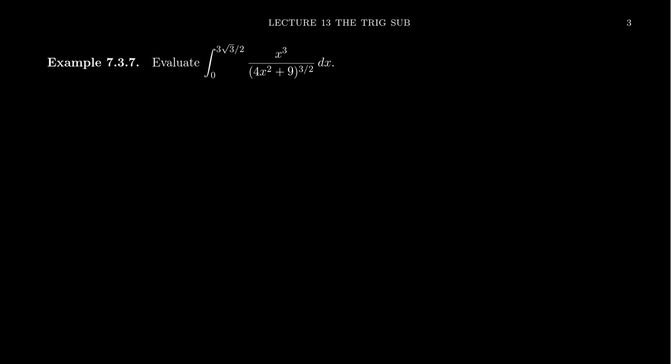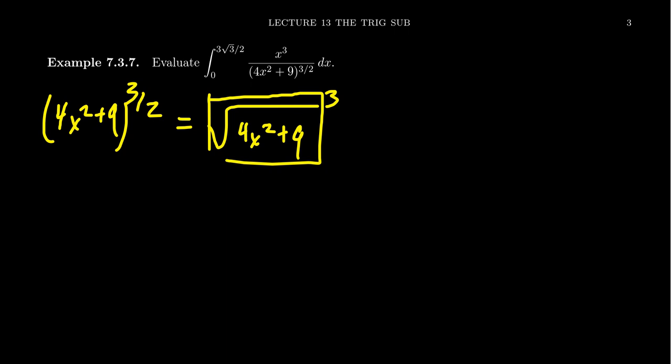Now to get started, what does this have to do with trigonometric substitutions? Well, let me remind you that if you take 4x squared plus 9 to the 3 halves, that's the same thing as the square root of 4x squared plus 9 raised to the third power. And so we do have this square root of a quadratic polynomial inside this integral. That indicates to us that we would want to use a trigonometric substitution. But what's a little bit different this time is that notice we don't have an x squared, we have a 4x squared. What do you do with that coefficient right there?